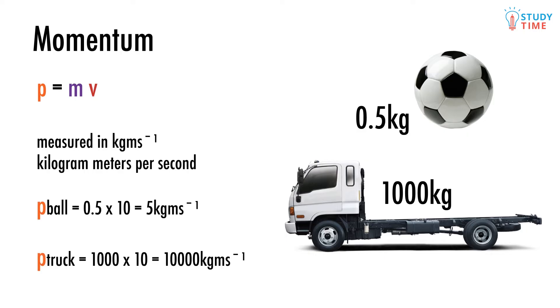Here are the momentums for each of these objects. The ball will just be 0.5 times 10 which will be 5 kilogram meters per second. The truck though will be a thousand times 10, so it'll be 10,000 kilogram meters per second.